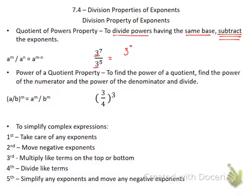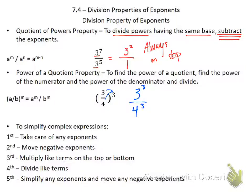The one thing that's important to know is that whenever I use the division property, my answer always goes on the top. The second rule is: when I have parentheses with division inside, I'm going to share the exponent with the top and the bottom. So this will be 3 to the third power over 4 to the third power. Since these are not the same base, I couldn't go any further — that would be my final answer: 3 to the third on top, 4 to the third on the bottom.